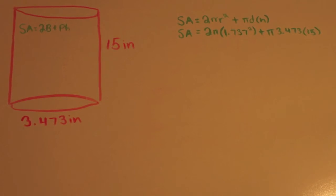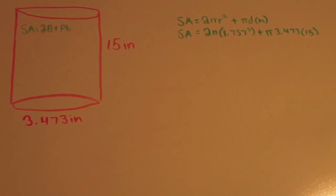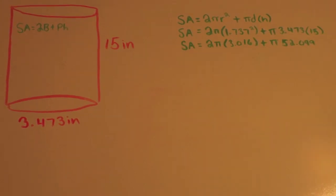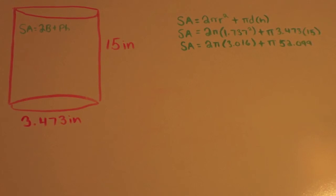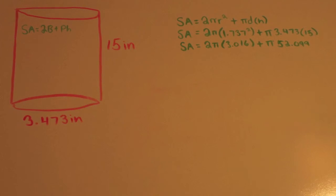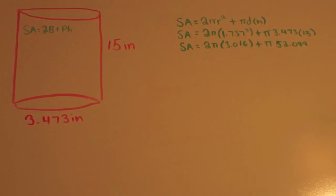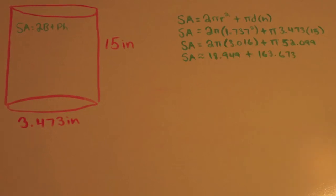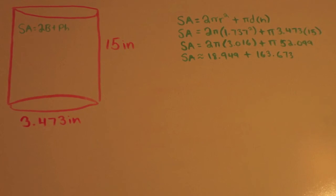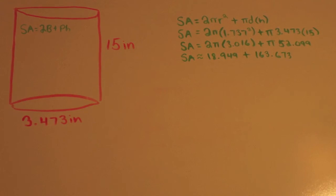I get 2 pi times 1.737 squared plus pi 3.473 times 15. After I square 1.737 and multiply 3.473 times 15 I get 2 pi times 3.016 plus pi 52.099 is the surface area. After I multiply what is left to multiply, I get that the surface area is approximately 18.949 plus 163.673.